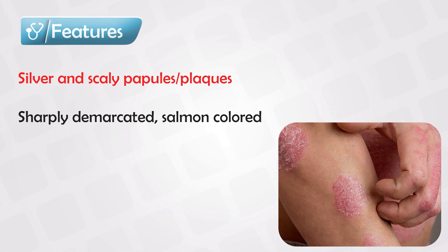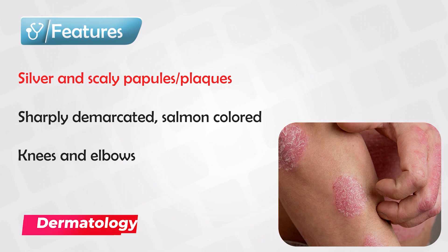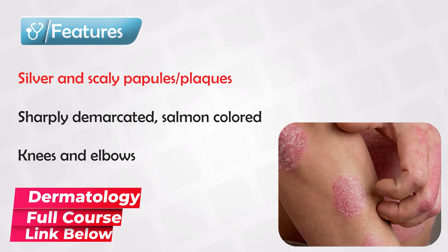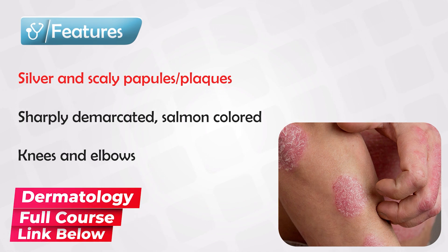Most commonly, they affect the knees and elbows, but they can also be seen in the lumbosacral area, the scalp, the genital area, and the gluteal cleft. Generally speaking, they can be seen anywhere in the body.